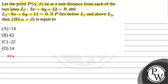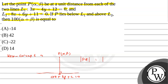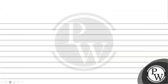Before solving the problem, we will talk about the key concept upon which we will solve the problem. The key concept is: if there exists a line Ax plus By plus C equals 0, and from point P(α, β) a perpendicular PQ is drawn, then the length of PQ equals the absolute value of (Aα plus Bβ plus C) divided by the square root of (A² plus B²).